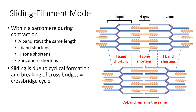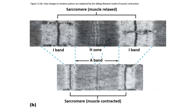This shortening is brought about by the cyclical formation and breaking of crossbridge cycles. Crossbridge cycles are the interaction between the thick filament — specifically the heads of the myosin filaments sticking up — and the thin filaments. That interaction forms a crossbridge, which is made and broken over and over in a cyclical pattern until the entire sarcomere shortens.